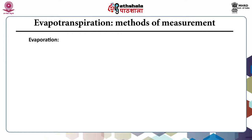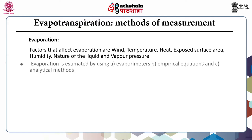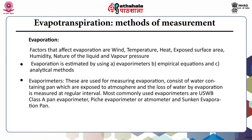Regarding evapotranspiration: factors that affect evaporation are wind, temperature, heat, exposed surface area, humidity, nature of the liquid and vapor pressure. Evaporation is estimated by using evaporimeters, empirical equations and analytical methods. Evaporimeters are used for measuring evaporation — they consist of water-containing pans exposed to the atmosphere and the loss of water by evaporation is measured at regular intervals. The most commonly used evaporimeters are the USWB Class A pan evaporimeter, pitch evaporimeter (or atmometer), and the sunken evaporation pan.